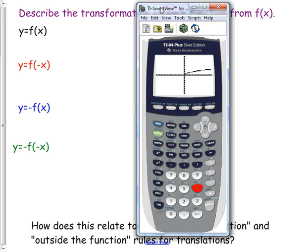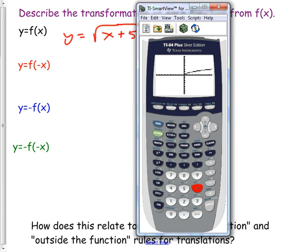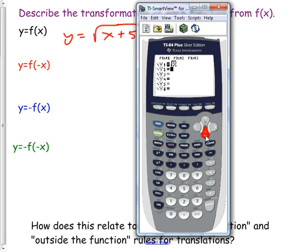Back to this - we have our parent function. If you wanted to move it up, down, left, or right you've already learned that. Like y equals square root of x, moving it left five or up one. Now for a reflection - same thing as a flip - you use negatives. Go to y equals, leave the first one alone, go to the next line, make another square root, and this time throw a negative inside: square root of negative x.